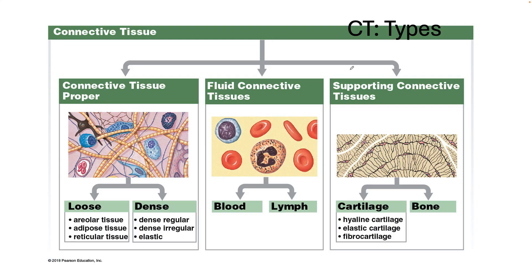There are lots of types of connective tissue, and we can split them into three main categories: connective tissue proper, fluid connective tissue, and supporting connective tissue. Each of these can also be split into subtypes — for example, connective tissue proper can be split into loose versus dense, and supportive connective tissue can be split into cartilage versus bone. As we go through each type, aim to learn the structure, function, and location example.